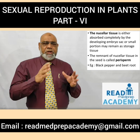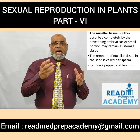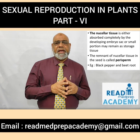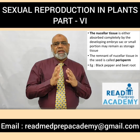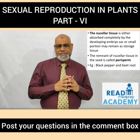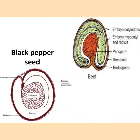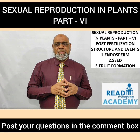The funiculus sometimes develops into a fleshy, often colorful structure called the aril — examples include Myristica and Pithecellobium. The nucellular tissue is either absorbed completely by the developing embryo sac or a small portion may remain as a storage tissue called the perisperm. Examples of perisperm include black pepper and beetroot. In the black pepper seed image you can see the perisperm in the center surrounded by the embryo and pericarp; in the beetroot image there is a central perisperm surrounded by the embryo, cotyledons, and seed coat.